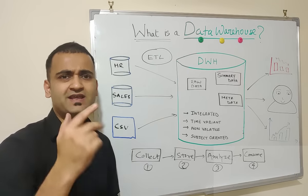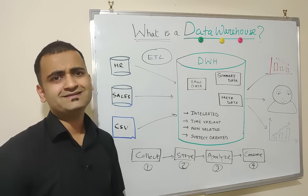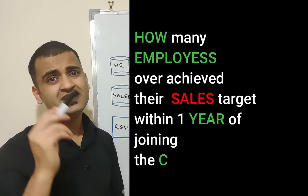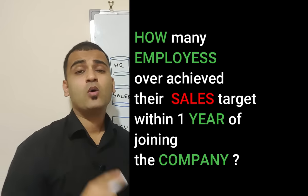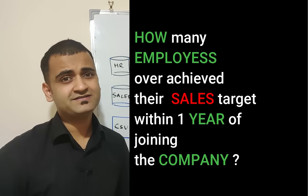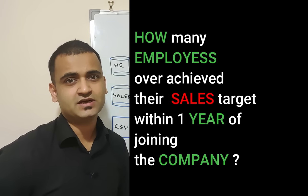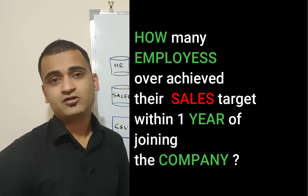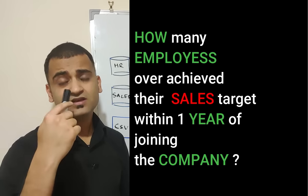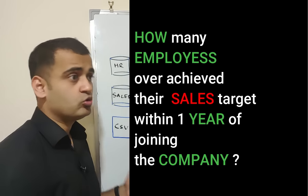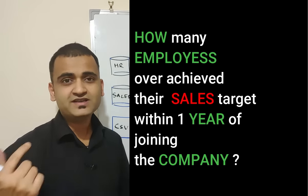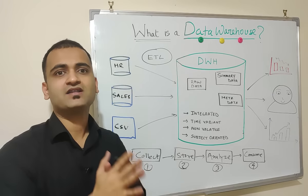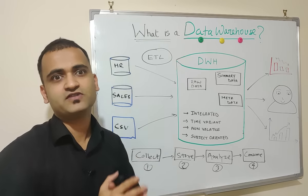So let's understand better with an example. Suppose a company wants to analyze how many employees have exceeded or overachieved their sales target within one year of their date of joining. Now you can understand that there are different dimensions coming into picture. One could be the employee details like employee name, employee ID and date of joining. And second would be the sales which was generated by those employees in the sales system. Now this information has to be analyzed and business has to understand who all are the best performing employees within the first year of their joining.